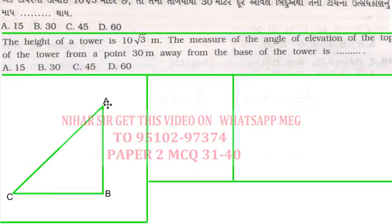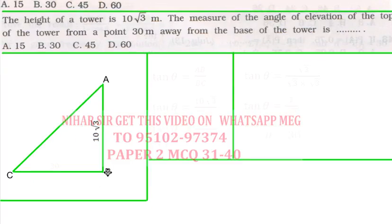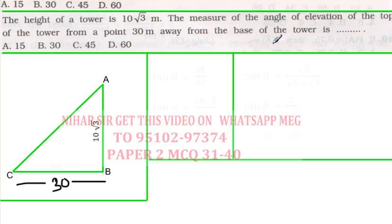Next MCQ: the height of a tower AB is 10√3. The measure of the angle of elevation of the top of the tower from a point 30 meters away from the base — so BC is 30 meters. The angle of elevation is my target.